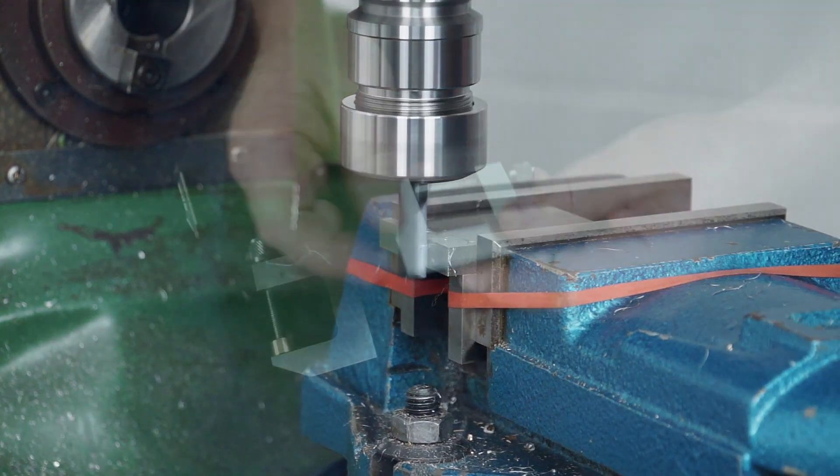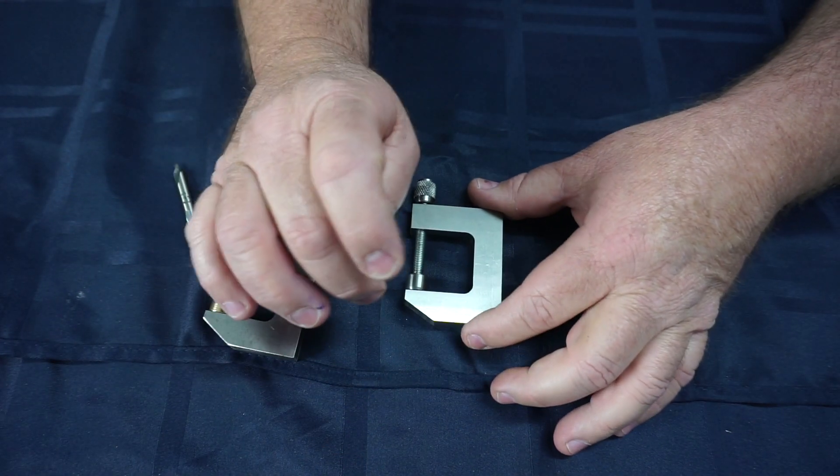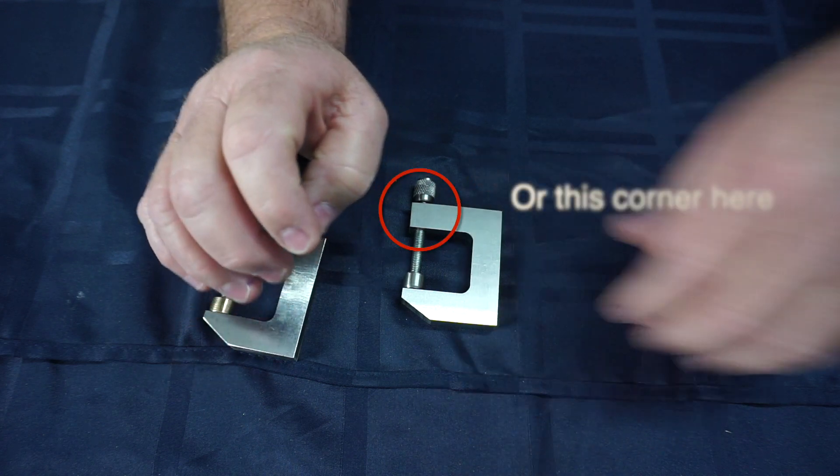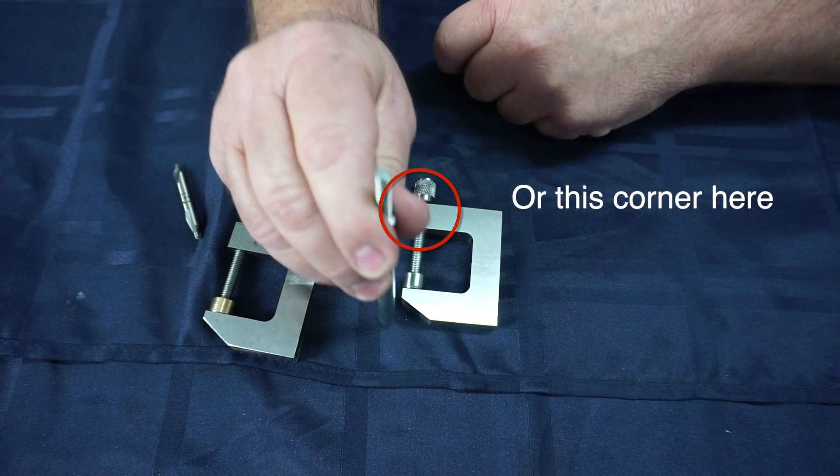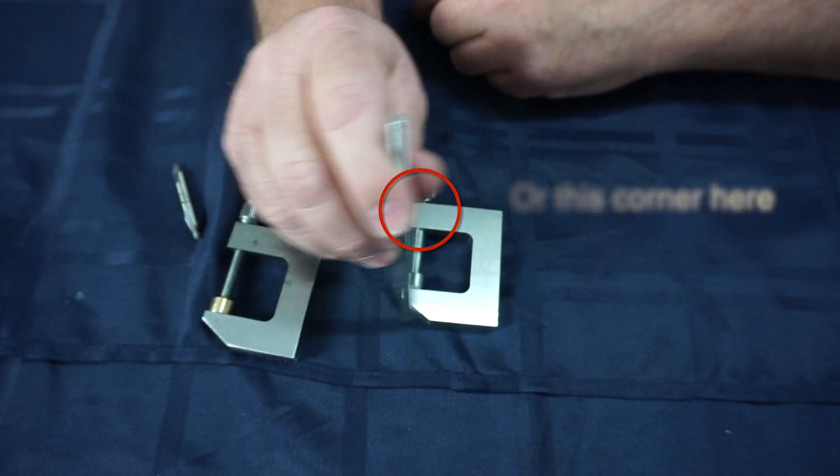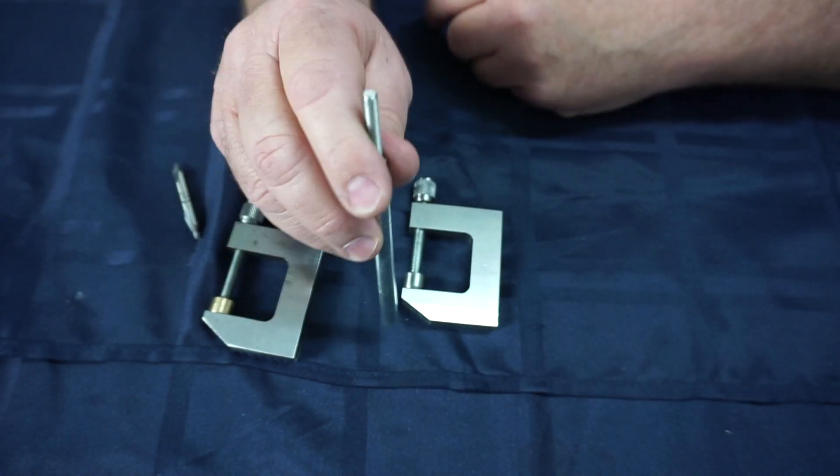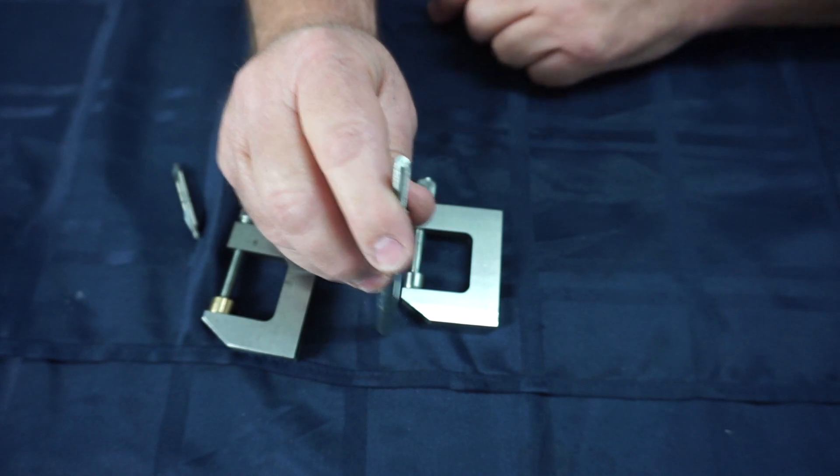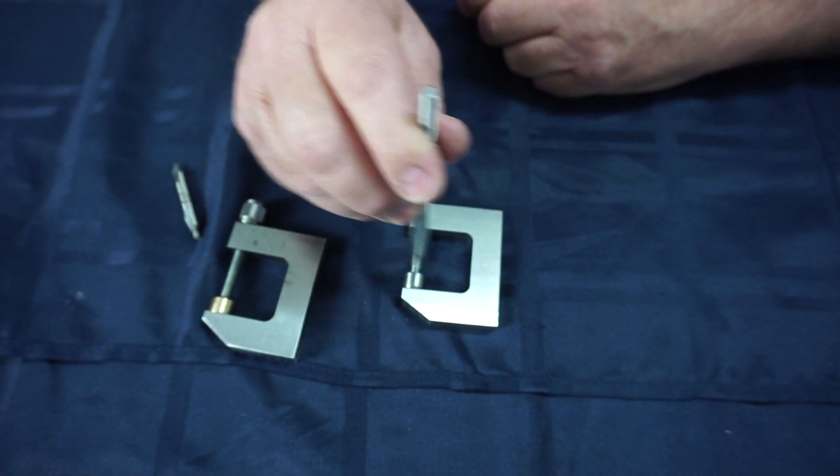The next operation was to attain the datum point. The datum that I set for this job was this back corner here on the right hand side. Usually we always set the left, especially when I'm CNC milling, but I set this one on the right hand side, so I came in and did all my work from this operation here.